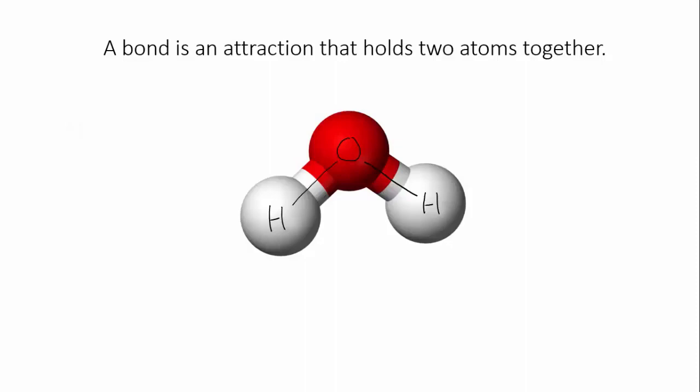It's because of chemical bonding that our universe contains more than just the hundred-odd naturally occurring elements that we know to exist. Bonding turns elements into compounds and gives us the almost infinite variety of different substances that we encounter every day.